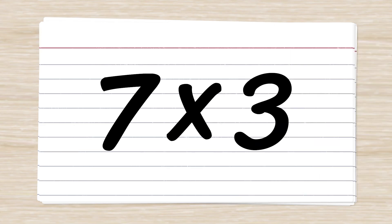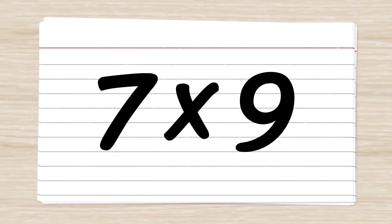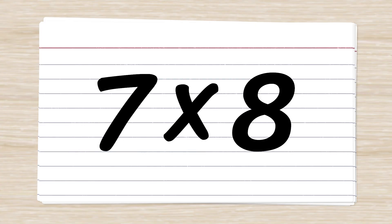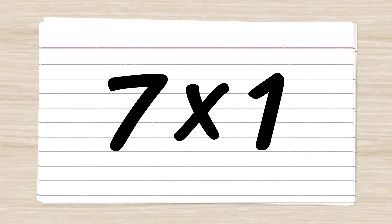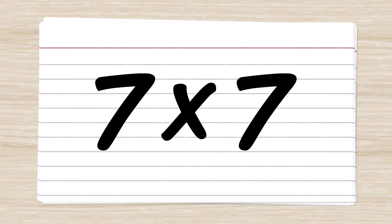Seven times three. Twenty-one. Fifty-six. Twenty-eight. Seven times one. Seven. Seven times seven. Forty-nine.